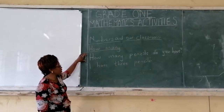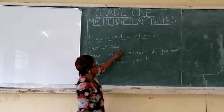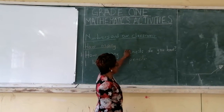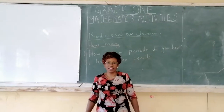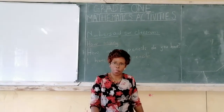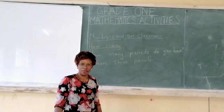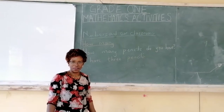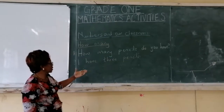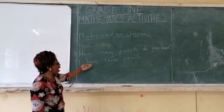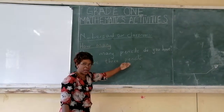For example, I have written my sentence: How many pencils do you have? So I am asking you at home — tell me, how many pencils do you have? Now when you are writing your answer, you say: I have three pencils.